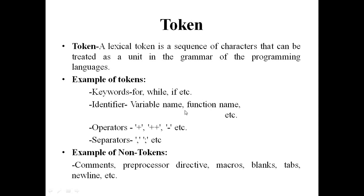Next, operators. What are the operators we are using in programming languages? We can consider them as tokens. Plus, minus, equal to, assignment operators — those are treated as tokens. And separators are also considered tokens: comma, semicolon, double quotes — those are all tokens.